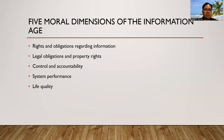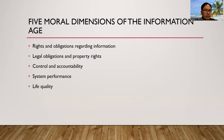The five moral dimensions of the information age. First is rights and obligations regarding information. What privacy rights do people and organizations have with regard to one another? What can they safeguard? For example, websites, privacy, spyware, cookies. Second is legal obligations and property rights. In digital culture, where it is hard to track down and account for ownership and when it is simple to ignore such property rights, how can traditional intellectual property rights be protected? For example, trade secret, copyright, and patent law.